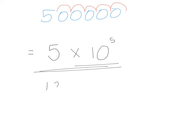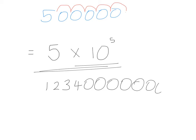Let's have a look at another number: 1,234,000,000. We want to write this in standard form. My method is to write down all the digits from the first non-zero number up to and including the last non-zero number. Here's the first non-zero number, here's the last one. So I'm going to write down these four numbers: 1, 2, 3, 4 — and it's going to be times 10 to the power of something.